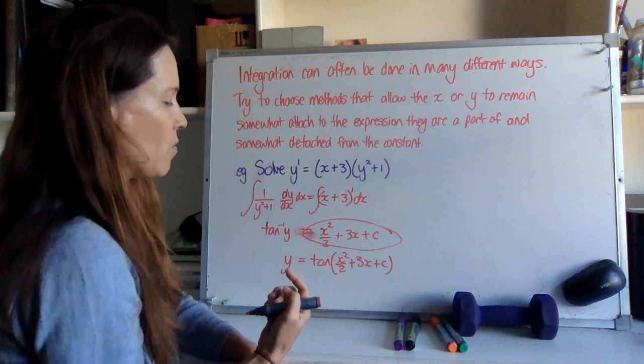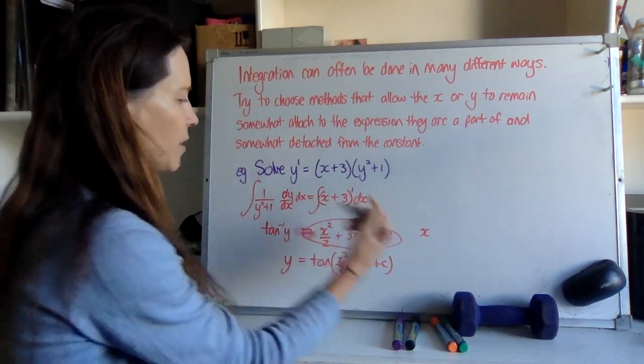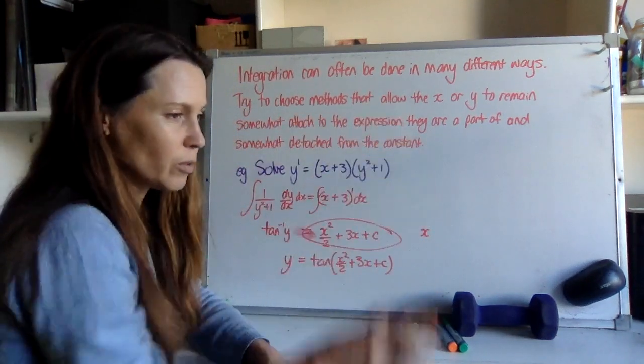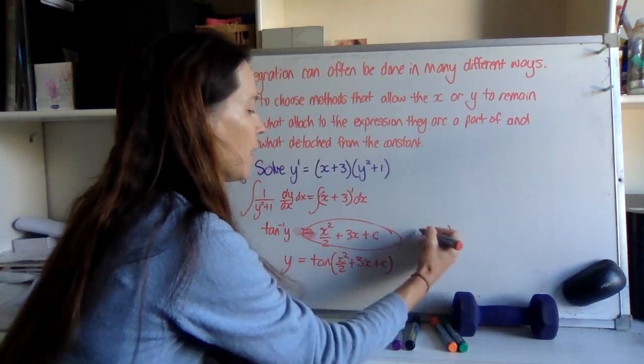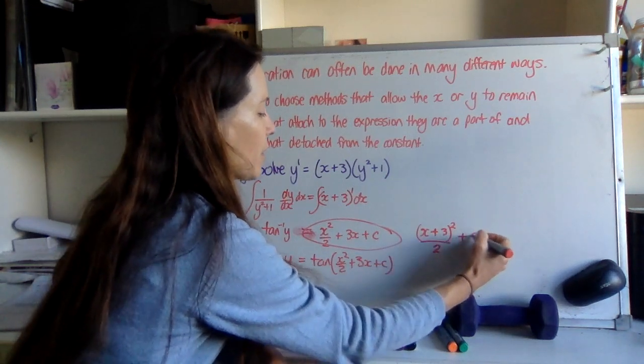So we could do a mini chain rule on this thing, reversing the chain rule. We could use that first formula on the integral list on our reference sheet and say that we get X plus 3 raised to a slightly bigger power divided by the new power plus a constant.